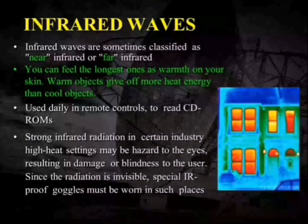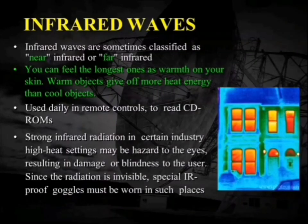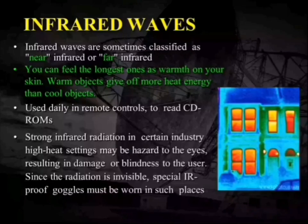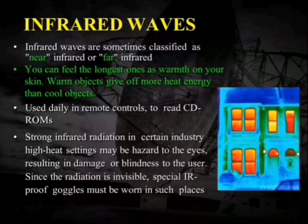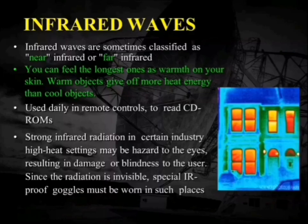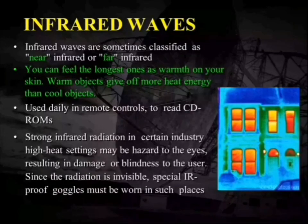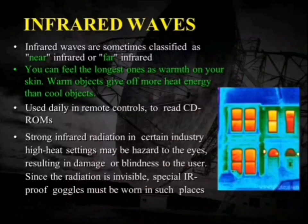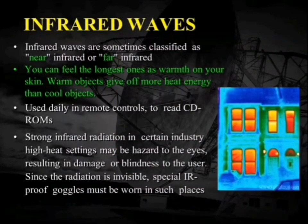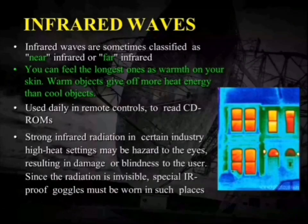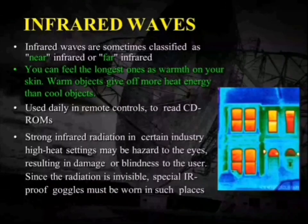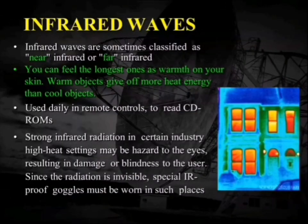Next is infrared rays, also referred to as near-infrared or far-infrared, which are related to heat or warmth we observe on our skin. Warm objects give off more heat energy than cool objects, releasing it as infrared waves. They are also used in remote controls and to read CDs and ROMs. Strong infrared radiation in certain industries can be hazardous to the eyes, so special IR-proof goggles must be worn. Thermal sensor images show different colors representing different levels of heat energy released by objects.